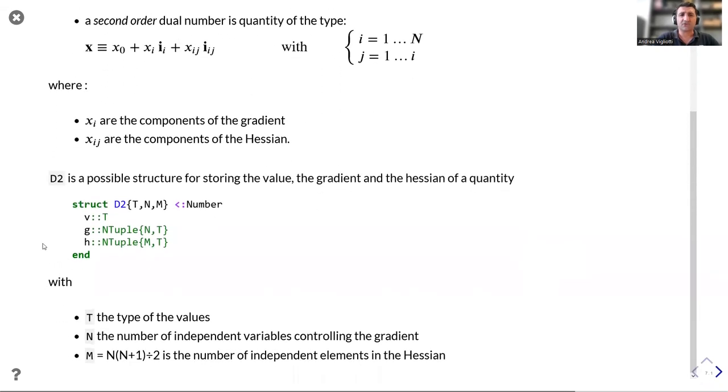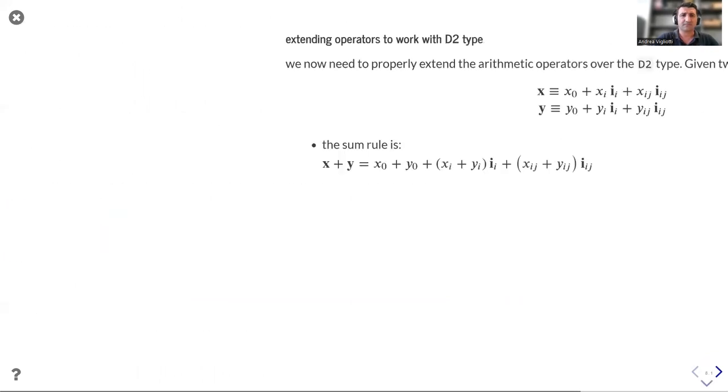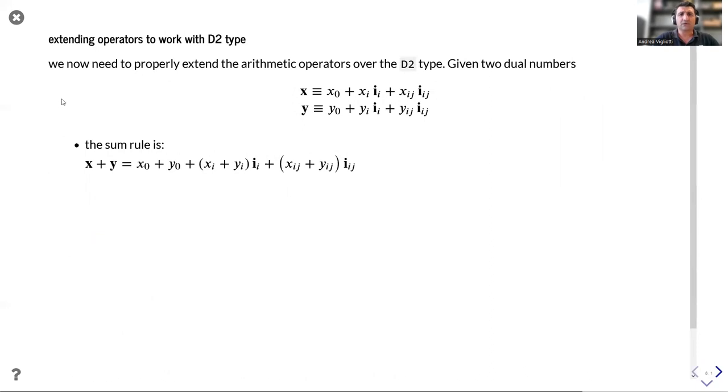A possible structure for storing and operating with this type of numbers is d2. Here, v is the value of the variable, which is a type t. G is a tuple containing the n entries of the gradient. H is a tuple containing the m entries of the hessian. Since we store only half of the hessian, m is not equal to n squared, but it is equal to n times n plus 1 divided by 2, with a saving both in terms of memory and in terms of computational time.